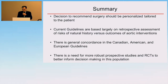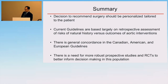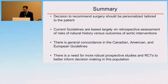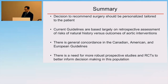In summary, the decision to recommend surgery should be personalized and tailored to the patient — that should be the primary recommendation when looking at size thresholds. The current guidelines are largely based on retrospective assessment of natural history risk versus outcomes of aortic replacement, and that missing piece of whether prophylactic aortic intervention actually alters natural history risk remains to be determined. There is general concordance between the Canadian, American, and European guidelines, and there is a need for more robust prospective studies and randomized trials to better inform decision-making in this population.